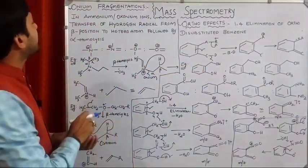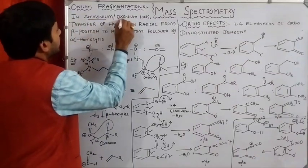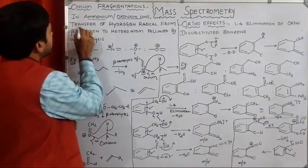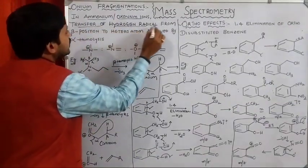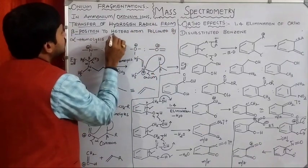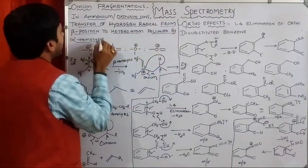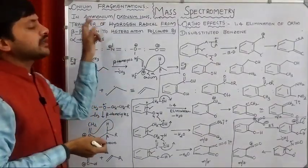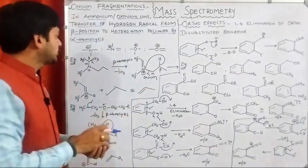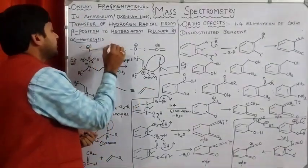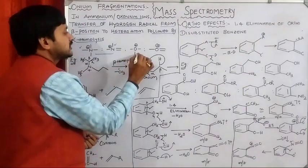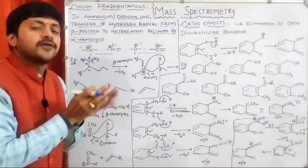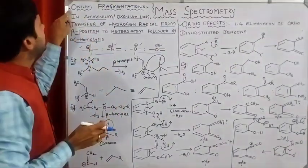Let's see the onium fragmentations. This is observed in ammonium and oxonium ions. In ammonium and oxonium ions, transfer of hydrogen radical takes place from the beta position to the heteroatom, followed by alpha homolysis. So, we need to have either ammonium ion or oxonium ion for onium fragmentations.